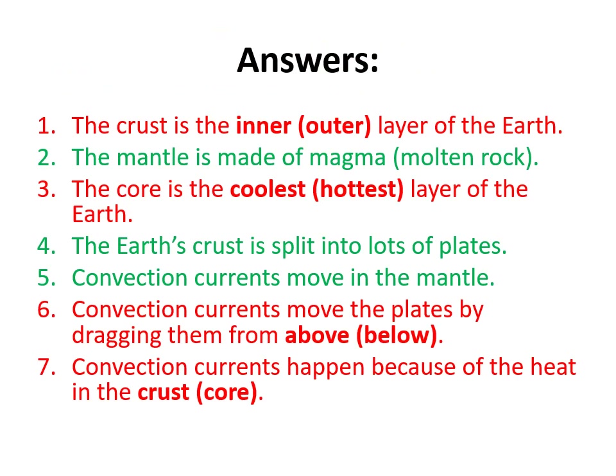Here are your answers. Anything in red is false, anything in green is true. In brackets I've put potential correct answers — ways to change the bold word, which is the one I've identified as incorrect. For number one, you should have written: 'The crust is the outer layer of the earth.' You could also have written: 'The core is the inner layer of the earth.' Number three: 'The core is the hottest layer of the earth.' Number six: 'Convection currents move the plates by dragging them from below.' Number seven: 'Convection currents happen because of the heat in the core.' Please make sure you've got all those correct — cross out anything wrong neatly and rewrite it. I want these seven statements to be a nice summary of the key facts you are expected to learn.